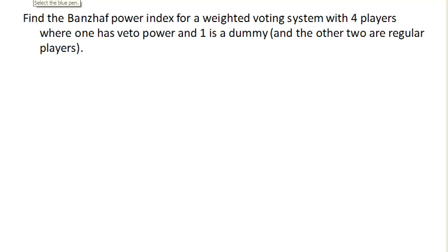This is tricky because we don't actually have the weighted voting system to look at. But the thing that we do know is that when we count up how many times each player is critical, player four is going to be critical. I'm just making player four be the dummy and player one is going to have veto, just because usually player one has the most votes and player four, or the last player, usually has the fewest number of votes.